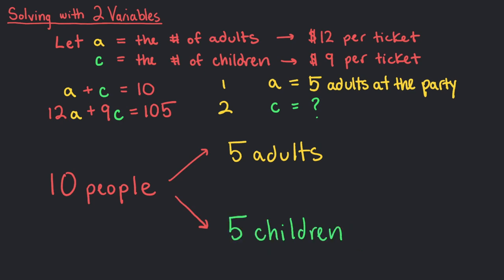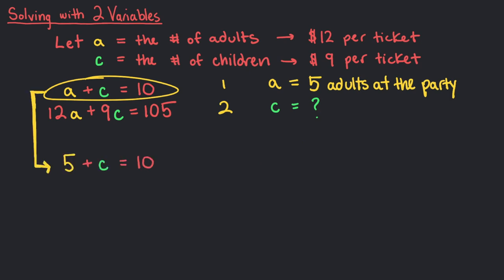We just used our first equation, a plus c equals 10, to substitute a for 5 to find c, the number of children. By subtracting 5 from both sides, we found that there are 5 children as well.